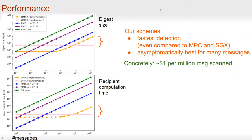Let's take a look at performance. You may be wondering whether the use of FHE is practical — and as you can see, it concretely is. It costs roughly $1 per million message scans based on our benchmark using Google Cloud instances. Asymptotically, our constructions are also the best for a large number of messages, and furthermore, we have the fastest detection even compared to MPC and SGX-based solutions.